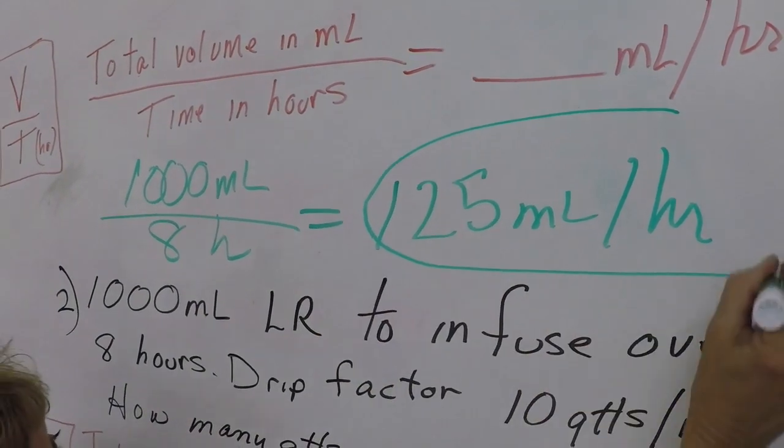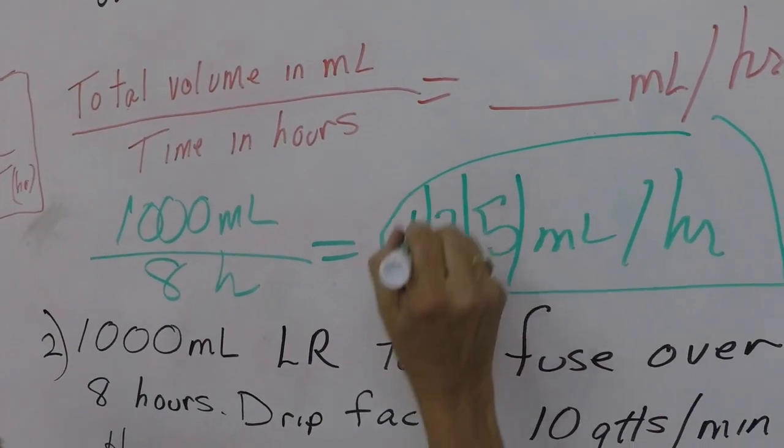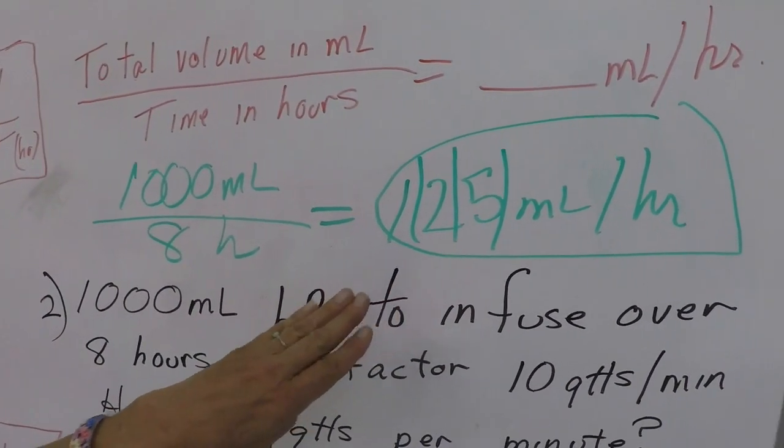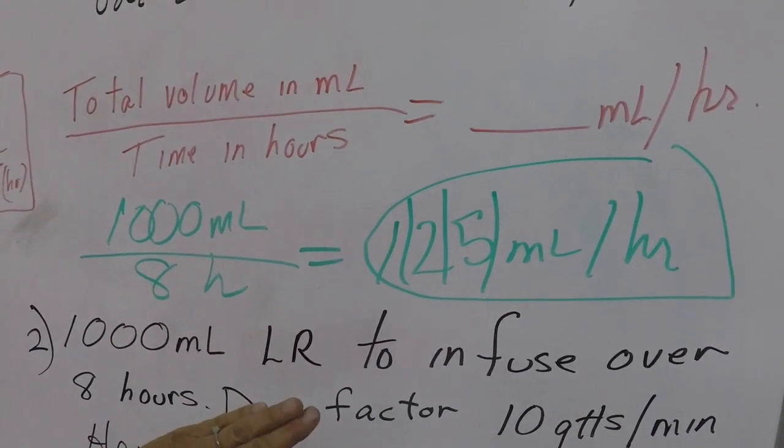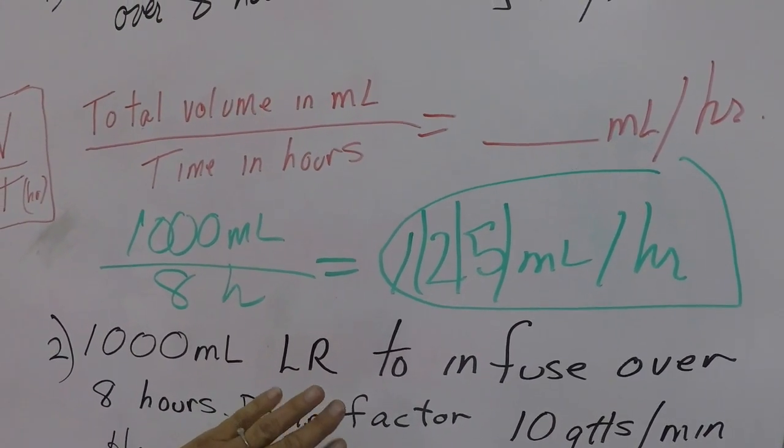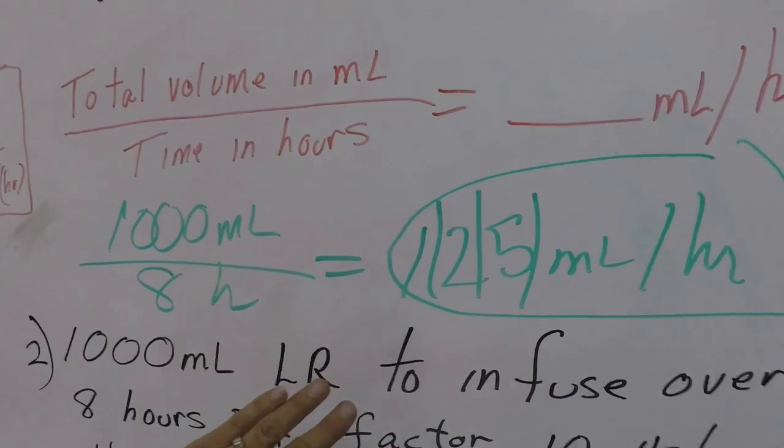Okay, so that's what I'll set my pump at. Just know that when you're setting your pump up, it doesn't take fractions, so you always have to round to a whole number. So that'll be 125 ml per hour.